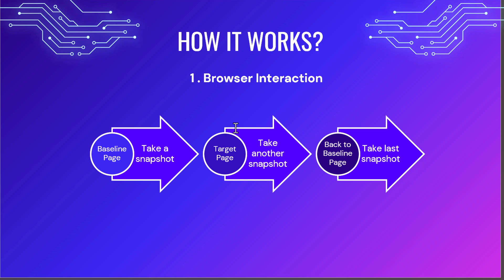The first step is browser interaction. You write a simple script and execute it. During execution, it will first go to the baseline page, the home page. Memlab takes a memory snapshot. Then the application navigates to the next page — whatever you want to click, it just clicks and goes to that page. Then it takes another snapshot. Then it goes back to the previous page, the baseline page. Three snapshots will be captured by Memlab.